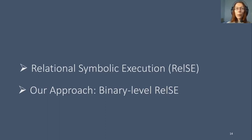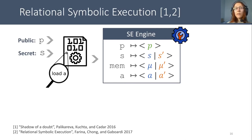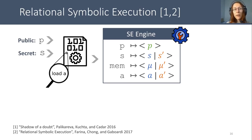Let me first introduce how relational symbolic execution works. Here we have a program that we want to analyze with a public input P, a secret input S, and a load A instruction that leaks the value of A into the cache. In relational symbolic execution, variables map to pairs of symbolic expressions if they may depend on secret, and to simple expressions if they do not depend on secret. For instance, the public input P is mapped to a simple expression, while the secret S maps to a pair S, S'. And because we analyze binary code, we also have a memory mu that initially contains secrets, so it is duplicated.